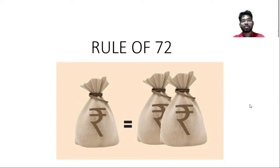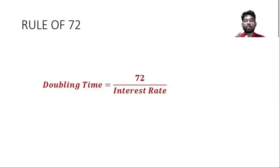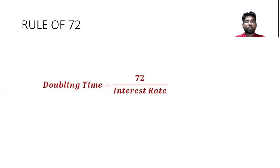To put things into the formula: we divide 72 by whatever interest rate we are going to get. Whatever number comes out, that is basically the number of years it will take you to double your investment.